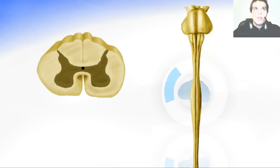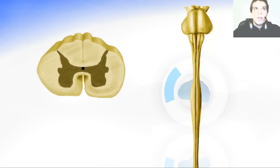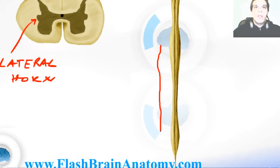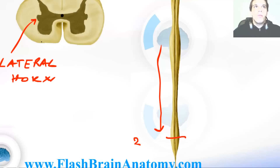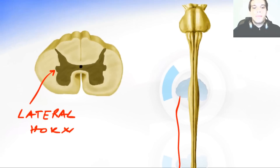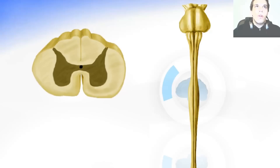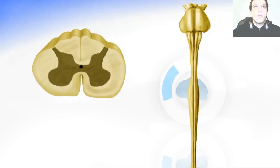The thoracic segments are smaller and also have an additional lateral horn in the gray matter. This lateral horn is present from the thoracic region all the way through the first two lumbar segments — after L2 it can no longer be found. The lumbar segments are bigger and have a different gray matter shape, and the sacral segments are smaller, also with a different gray matter configuration.